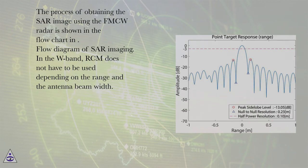The process of obtaining the SAR image using the FMCW radar is shown in the flow chart. Flow diagram of SAR imaging. In the W band, RCM does not have to be used depending on the range and the antenna beam width.